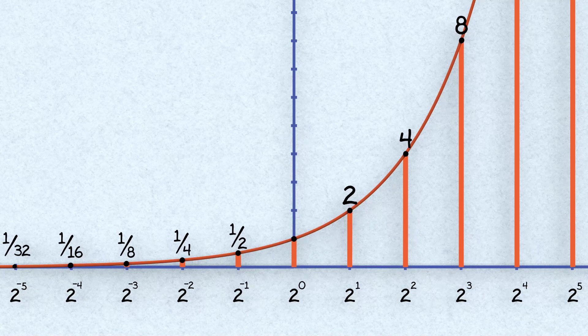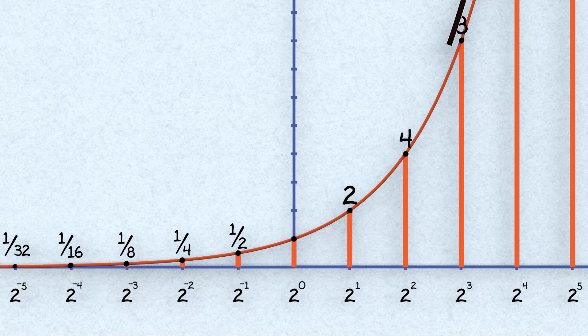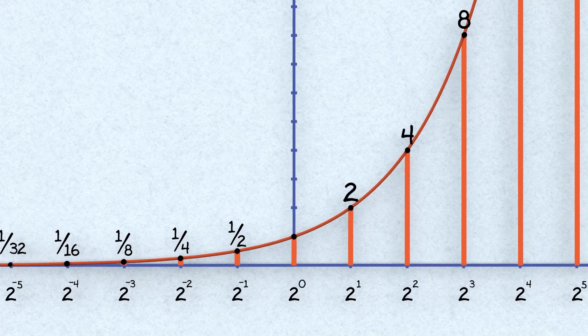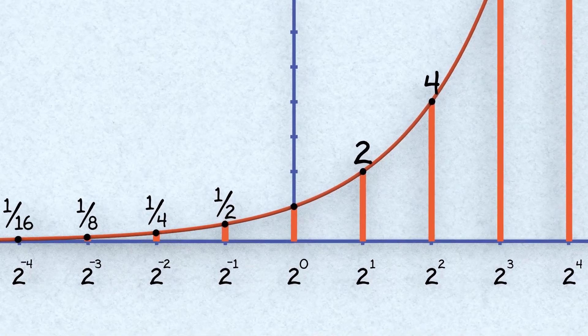So right there, serving as a sort of pivot between values climbing towards infinity and values shrinking towards nothingness is the exponent of zero, which makes everything a value of one.